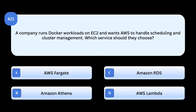Correct answer: AWS Fargate. AWS Fargate runs containers without managing servers or clusters, making it ideal for Docker workloads. Why others are incorrect: Amazon Athena is a query service, unrelated to containers. Amazon RDS is a managed database service. AWS Lambda is serverless compute but not designed for container orchestration.